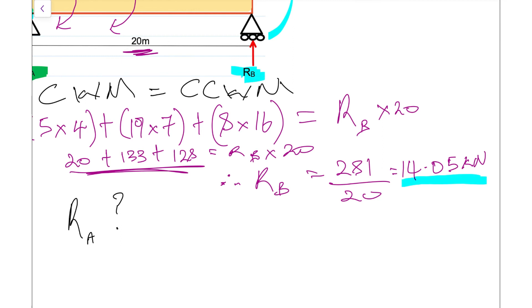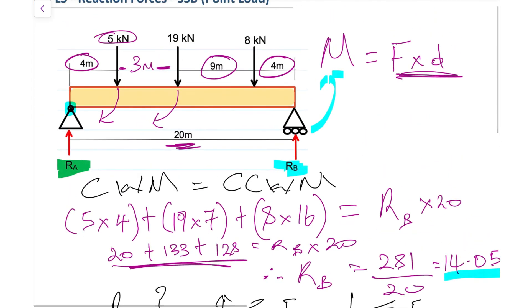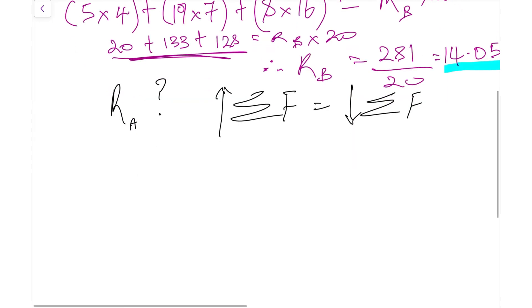To find R_A, we're going to adopt another approach. We're going to say the sum of our vertical forces—that's our up forces—should be equal to our down forces when we sum them. All the forces going up are R_B and R_A, and the forces going down are everything else: the 5 kilonewtons, the 19 kilonewtons, and the 8 kilonewtons.